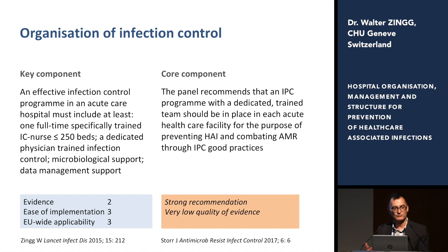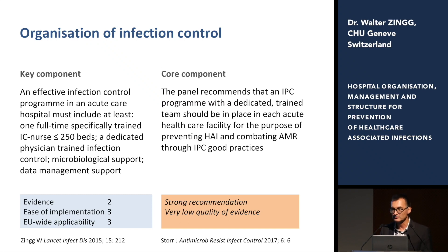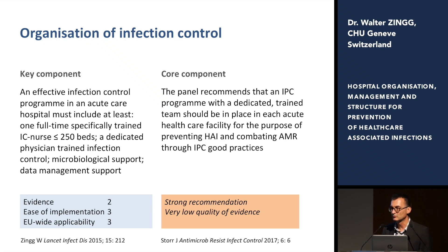By sticking to the evidence, we could only use numbers published 40 years ago. However, in the paper you can clearly see that we discussed this — for instance, the famous ratio of one nurse per 250 beds. Today the opinion is that you should have a ratio much more favorable than one to 250 beds. But basically, yes, you need infection prevention and control.